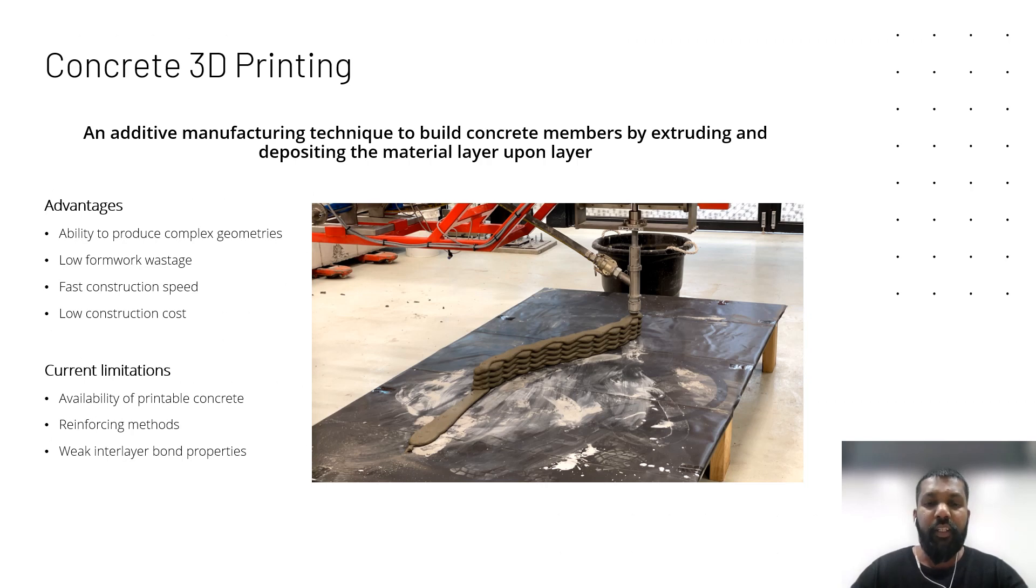So what is concrete 3D printing? Here we completely eliminate the use of formwork and use a robot to manufacture concrete members. First, the print design is programmed to the robot printer, then the print material which is concrete is pumped to the printer and extruded via a nozzle and deposited layer by layer to build the concrete member. I can run this video so you can get a sneak peek of what we do.